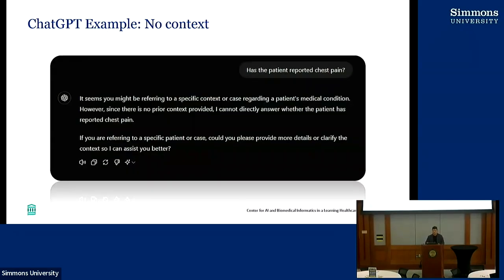Here's a really simple example. Many of you have used ChatGPT before. If you went to ChatGPT and asked the question with no context — 'Has the patient reported chest pain?' — it would have no idea what you're talking about. It literally says: 'It seems you might be referring to a specific context... however, since there's no prior context provided, I cannot directly answer whether the patient has reported chest pain.' It's like asking a stranger walking by — they'd have no idea what you're talking about.